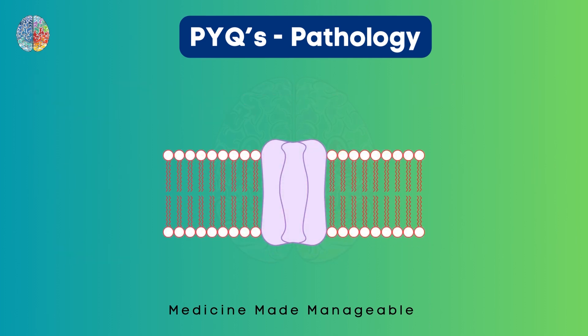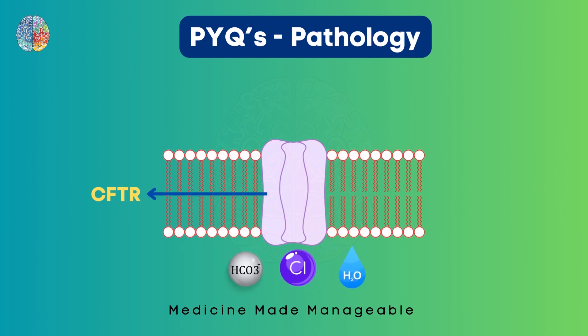Take this as a representation of the cell membrane. Here we have a channel called CFTR — cystic fibrosis transmembrane conductance regulator. This is responsible for the transport of many things including chloride, bicarbonate, and water. Normally this channel works, and these substances are transported through the channel and help in the formation of mucus.